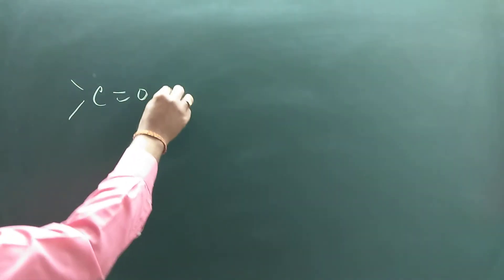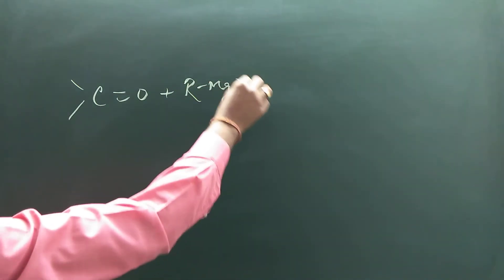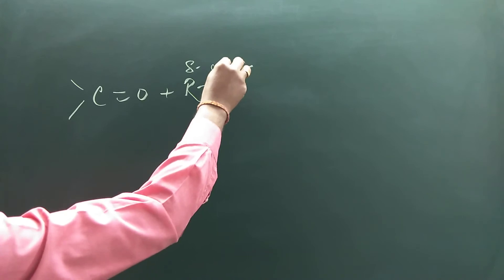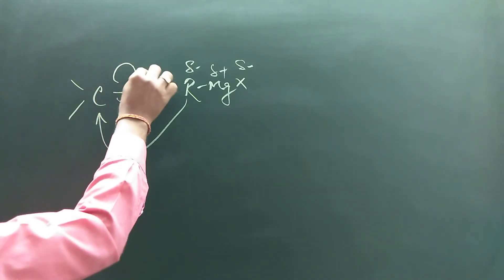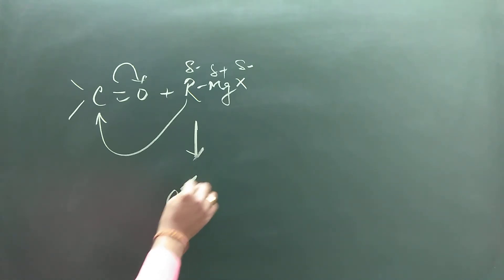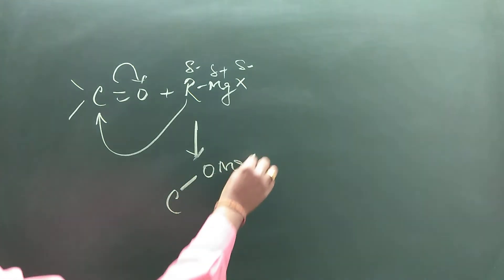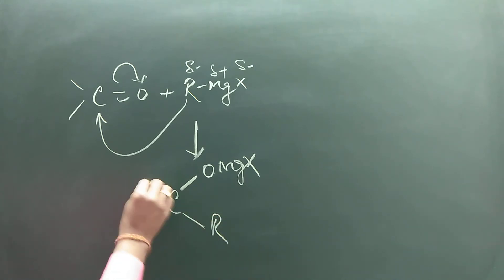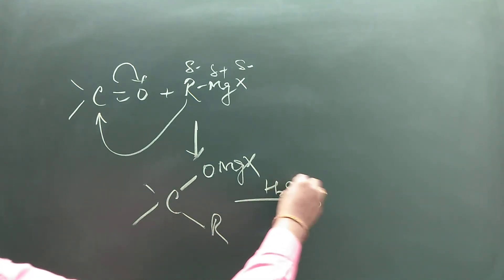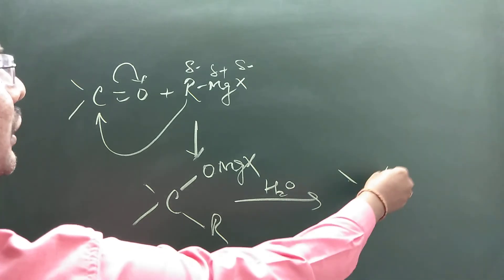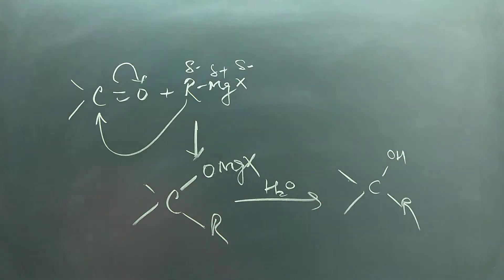Carbonyl compounds react with Grignard reagent. Hydrolysis of the intermediate gives alcohol. With formaldehyde, a primary (1°) alcohol is formed. With other aldehydes, a secondary (2°) alcohol is formed. And with ketones, a tertiary (3°) alcohol is formed.